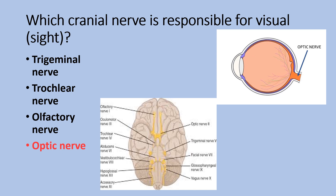The optic nerve is a central nervous system structure. It is a bundle of more than one million nerve fibers, ensheathed in the three meningeal layers and arising from the diencephalon. It transmits sensory information for vision in the form of electrical impulses from the eye to the brain.